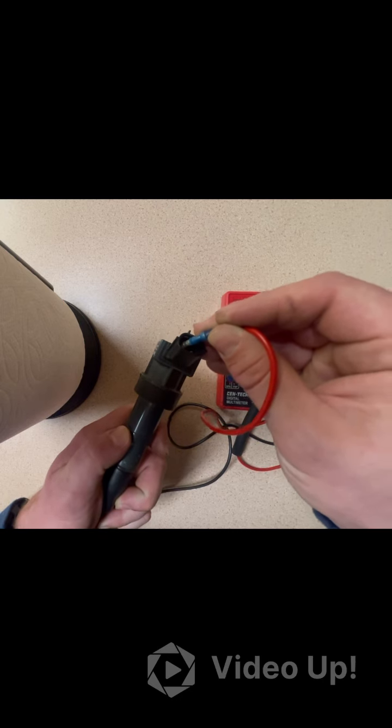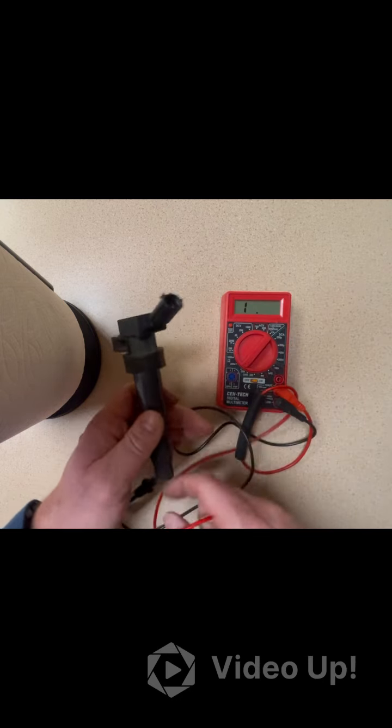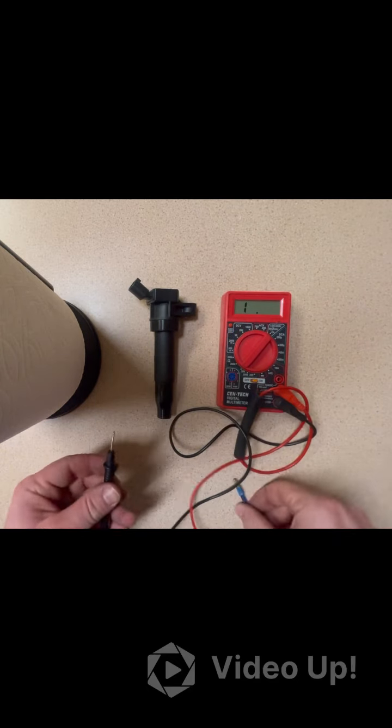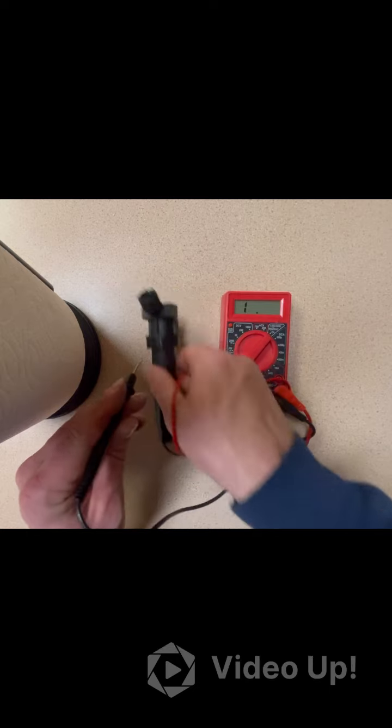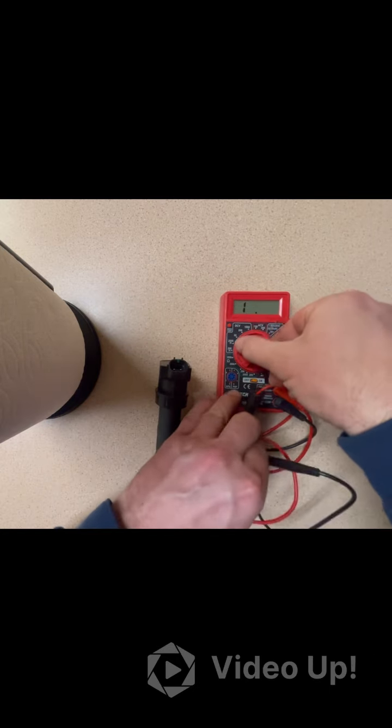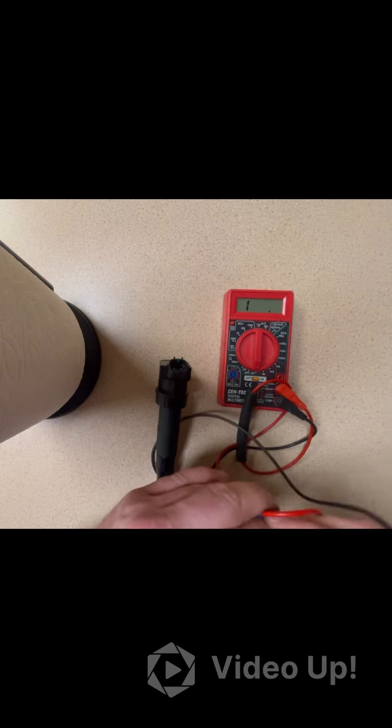If you don't believe me, the way we double check is here. I've already bought a new ignition coil because I knew my problem. This is a brand new ignition coil, same exact vehicle. Let's go ahead and recheck everything and I'll show you the demonstration. We'll check that top circuit first, put it back to 200, touch and touch.